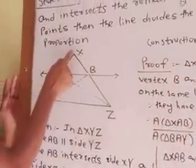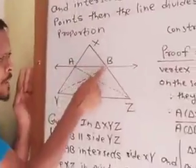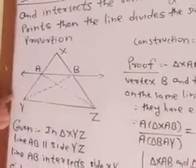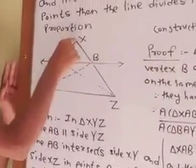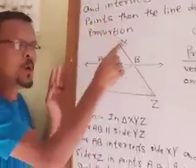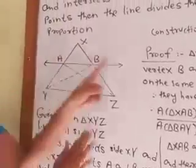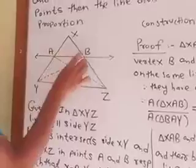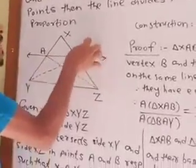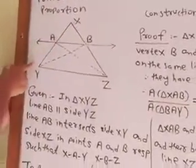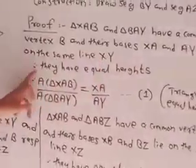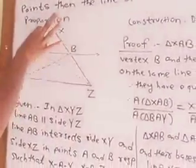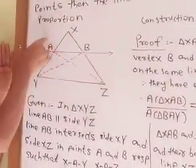For the proof, take the first pair of triangles: XAB and BAY. Their bases, XA and AY, lie on the same line XY, and they have a common vertex B. If both bases lie on the same line and they share a common vertex, then their heights are equal. Therefore, the ratio of their areas equals the ratio of their corresponding bases.